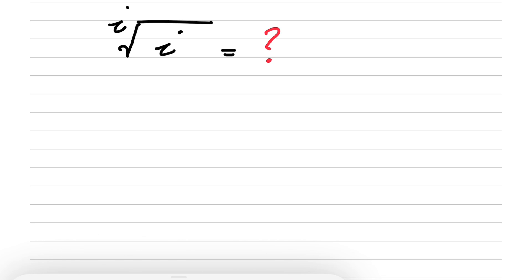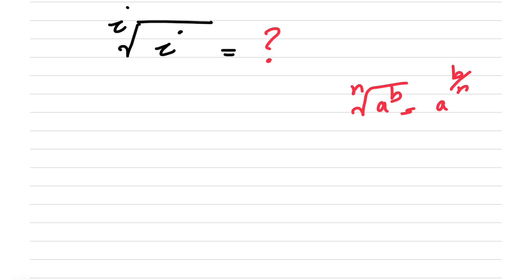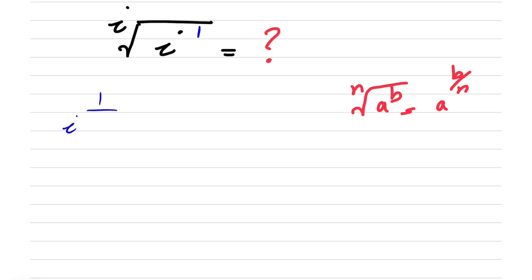So first of all, we know when we have the nth root of a to the power of b, this will be equal to a to the power of b over n. So here we know under this square root we have i to the power of 1, so basically this can be written as i to the power of 1 over i.